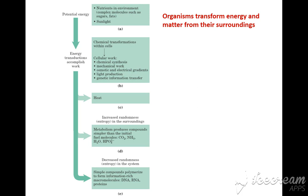Macromolecules like the nutrients we ingest — sugars, fats, etc. — are converted into smaller ones, liberating energy used in cellular or somatic work and heat. In catabolism this breakdown occurs, while in anabolism smaller molecules are built up into macromolecules such as DNA, RNA, and proteins, utilizing energy and decreasing entropy in the system.